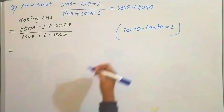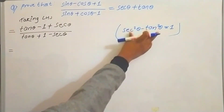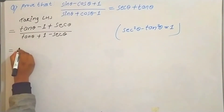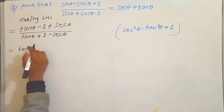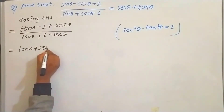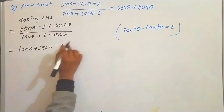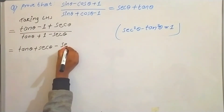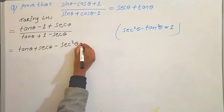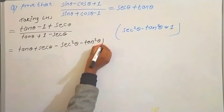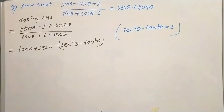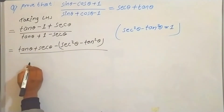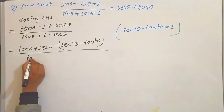We will now use the formula: sec²θ − tan²θ = 1. We know this formula. We will use it — substituting 1 with sec²θ − tan²θ in our expression.